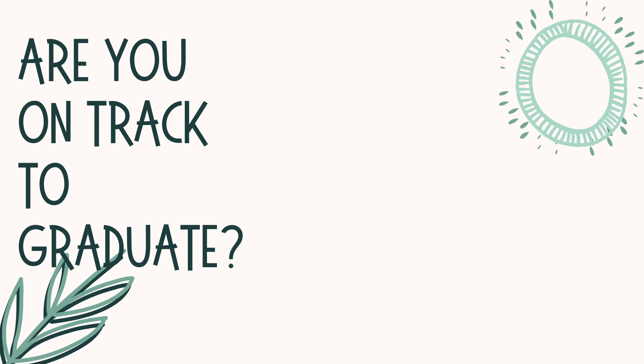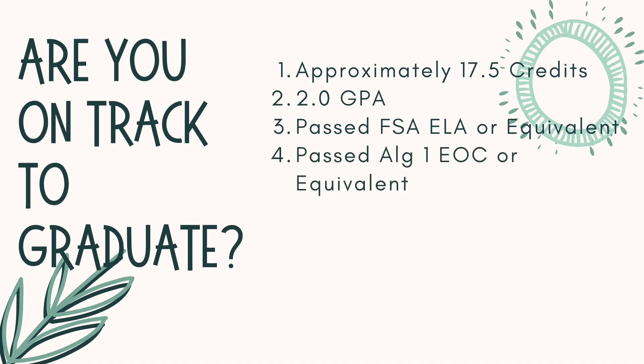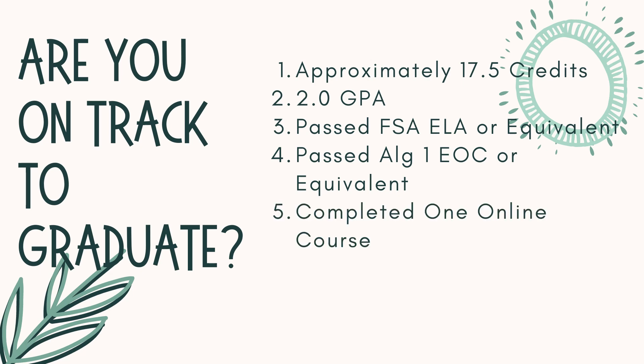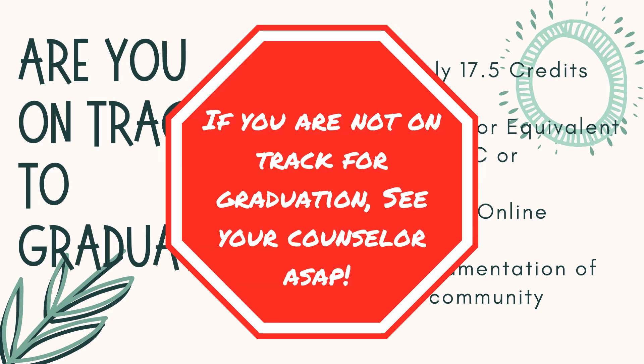As you are finishing your junior year, it's important to be sure that you are on track to graduate. At this point, you should have the following: approximately 17 and a half credits, at least a 2.0 cumulative grade point average, passed the FSA ELA or equivalent, passed the Algebra 1 EOC or equivalent, completed at least one online course, and documented and turned in 20 hours of community service. If you are missing any of these, you are not considered to be on track for graduation next year. You should see your school counselor ASAP to make a plan.